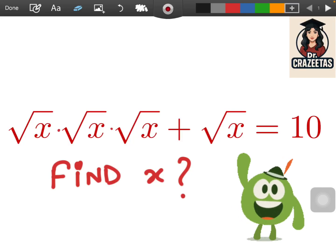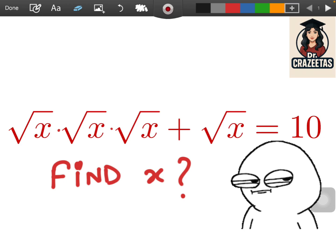Hello students, welcome to new problem of Math Olympiad. You can see a series of square roots of x there and some combination of multiplication and addition we are getting 10.